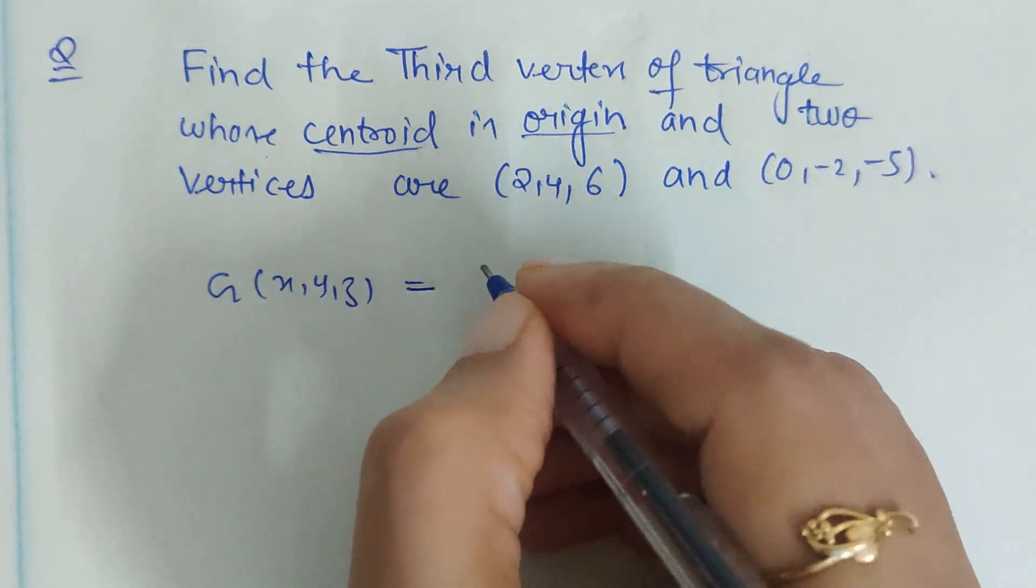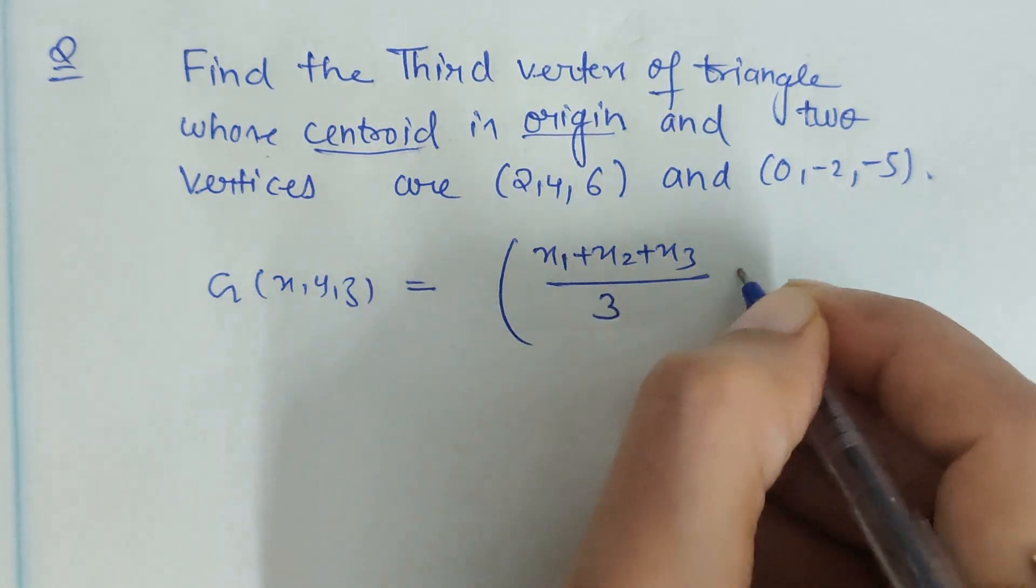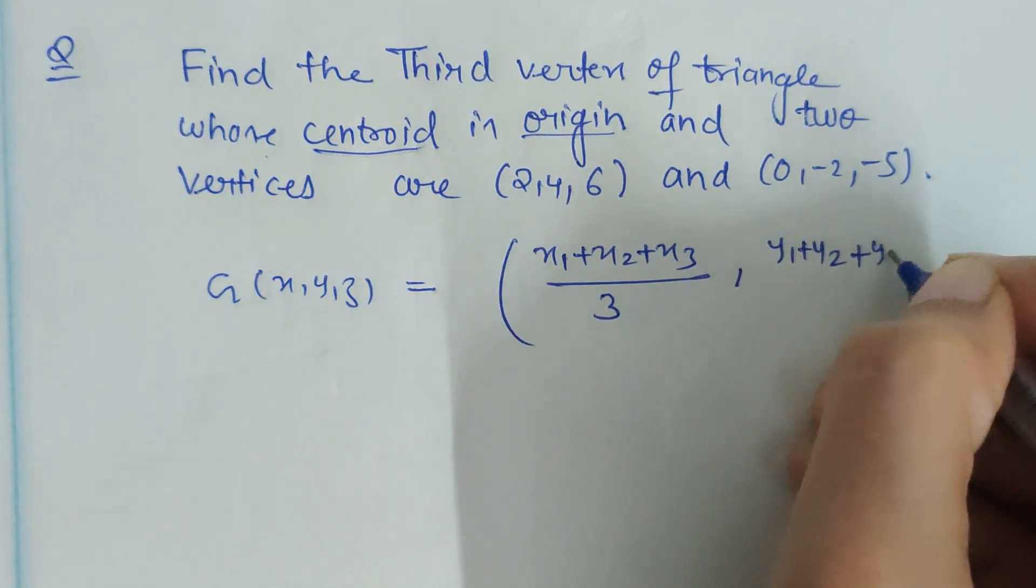If xyz be the centroid, the formula is given by (x1+x2+x3)/3 and (y1+y2+y3)/3 and (z1+z2+z3)/3.